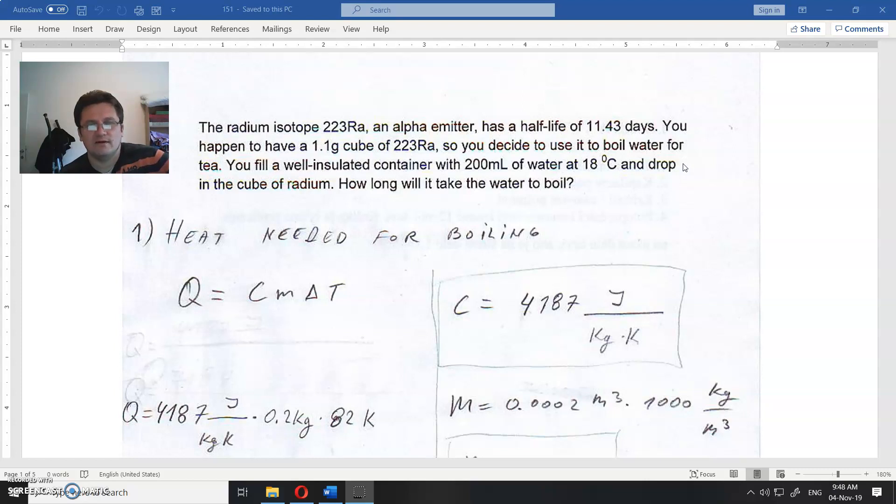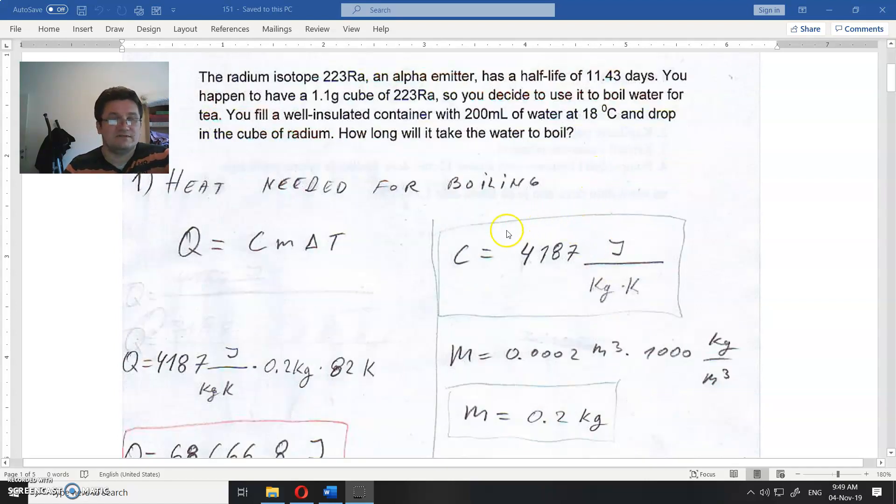First, we calculate the heat. How much heat do we need to boil the water? Q equals C M delta T, where Q is heat needed, C is water's heat capacity, M is mass of the water, and delta T is the temperature difference. From 18°C to 100°C is 82 degrees Kelvin. The specific heat of water is 4,187 J/kg·K—it's a large number, but it is what it is.